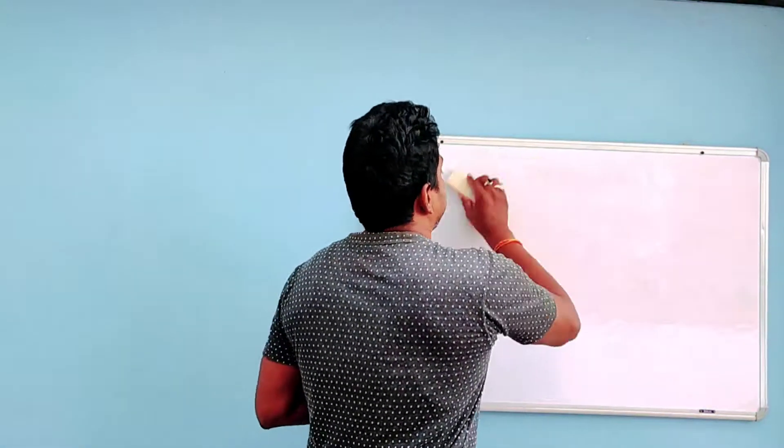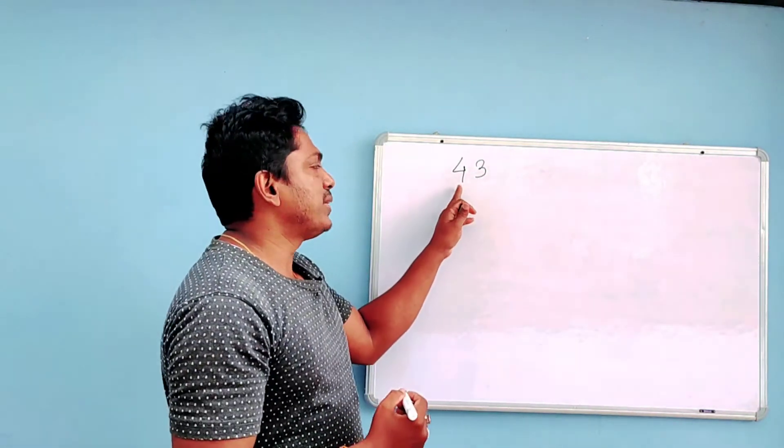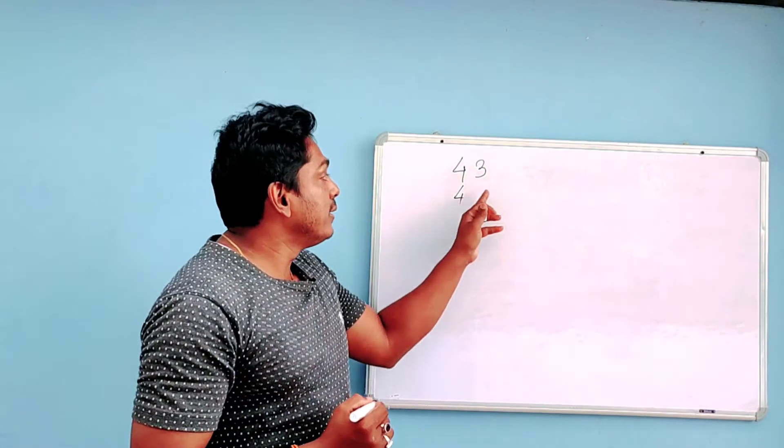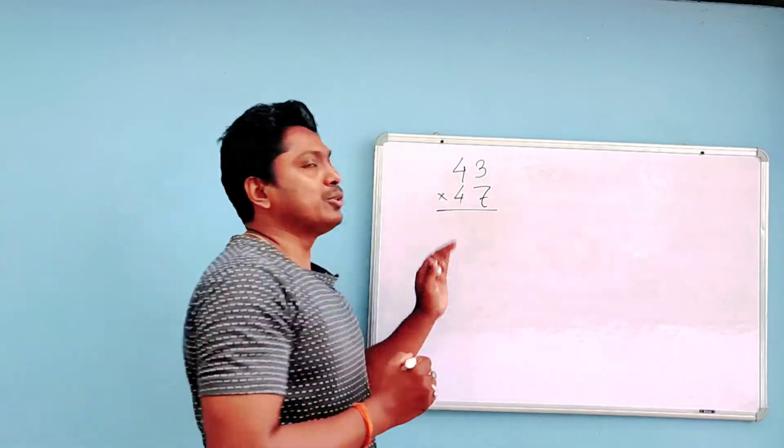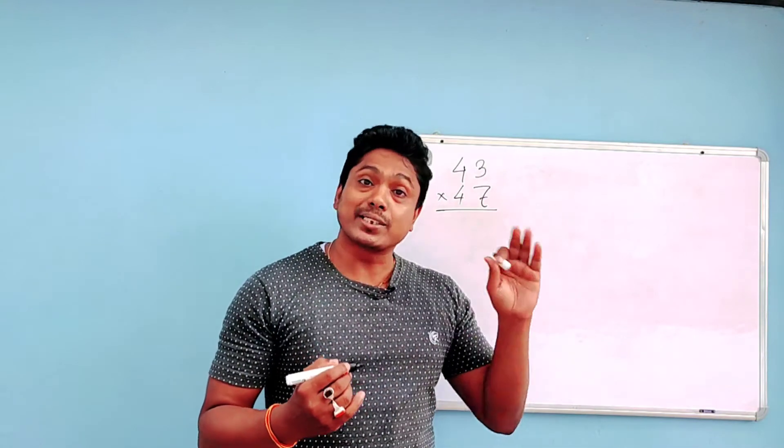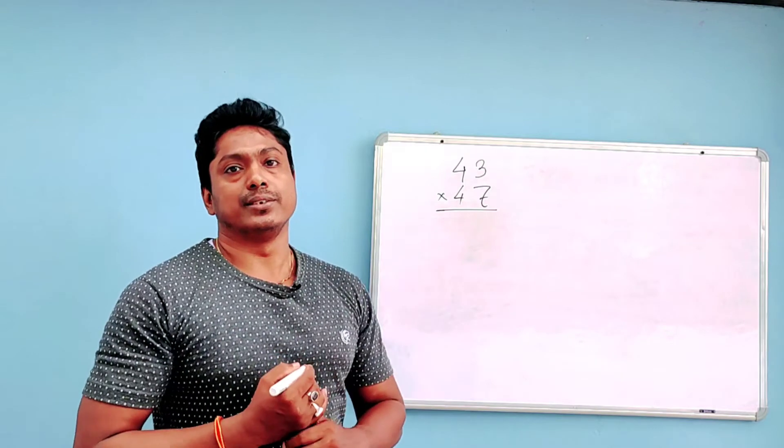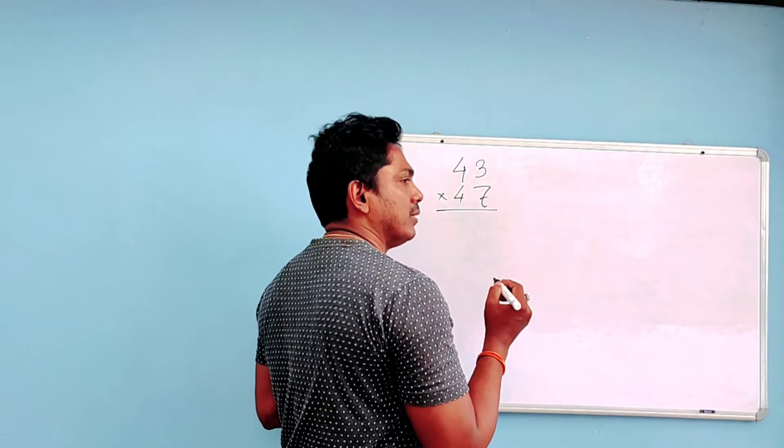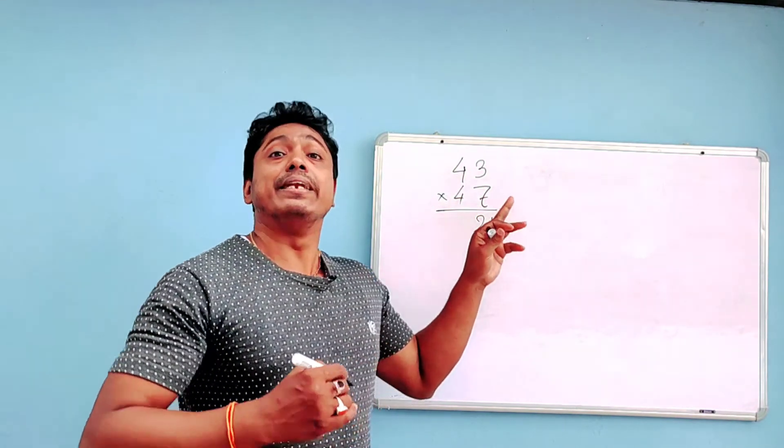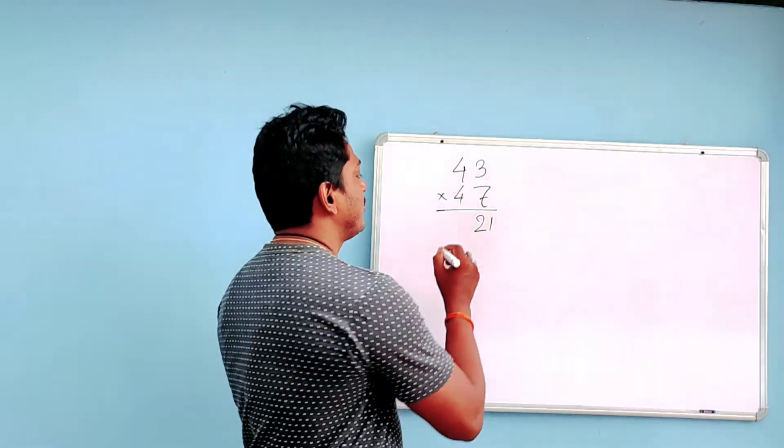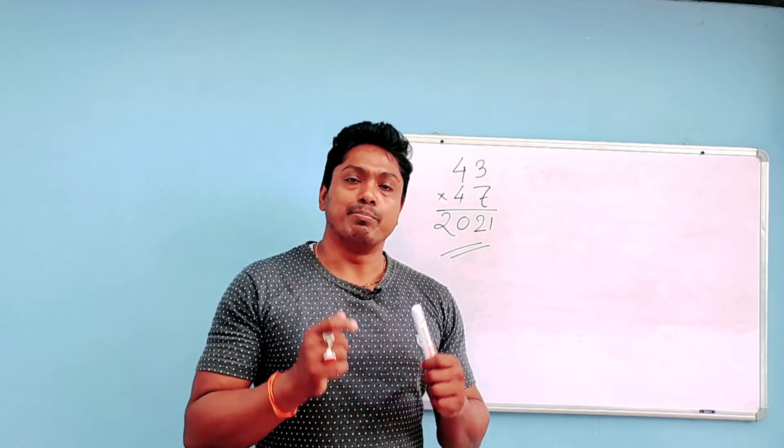Let's take another example: 43 and 47. The condition matches because the tens digit is the same - both are four. The ones digits are three and seven, which add up to ten. So three and seven multiply - three times seven is twenty-one. Write down 21. Next, what do you need to do? Four and four, no - four will be multiplied with the next number of four, which is five. So four times five is twenty. Very simple.